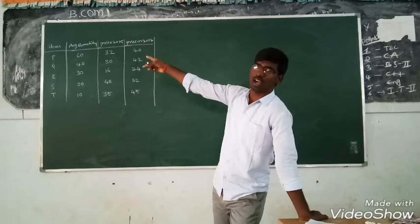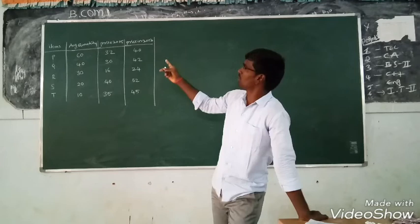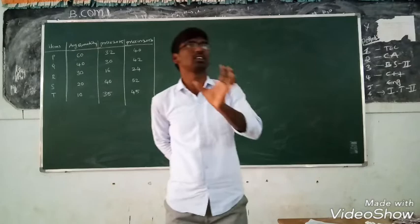Items are P, Q, R, S, T. Average quantity consumed: 60, 40, 30, 20, 10. The price in 2015 and the price in 2017.